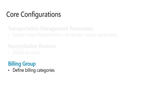Then we have billing groups, which are user-defined and allow us to specify billing categories such as freight, fuel, dock fees, and detention — any of the different categories that you might find on your carrier invoice.